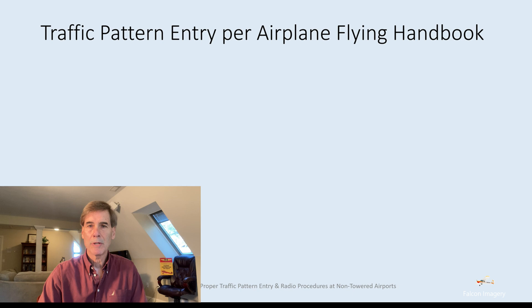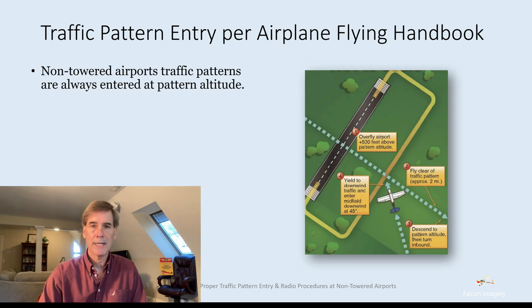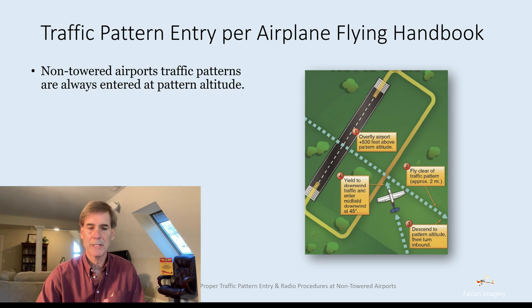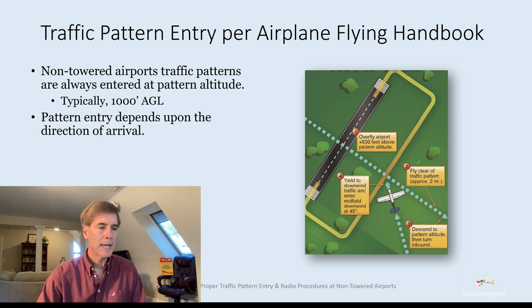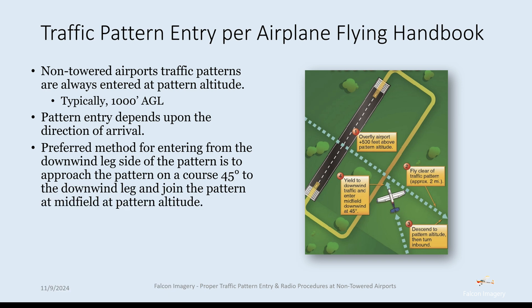The Airplane Flying Handbook is a very valuable resource for knowing how to fly a traffic pattern. Non-towered airports' traffic patterns are always entered at pattern altitude, roughly 1,000 feet AGL for most airports. Pattern entry depends upon the direction of arrival. The preferred method for entering from the downwind leg side is to approach the pattern on a course of 45 degrees to the downwind leg and join the pattern at midfield pattern altitude.